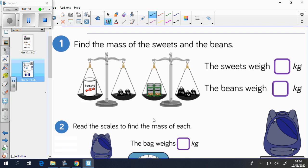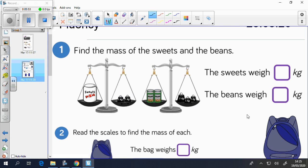Have a go at question 1. It says, find the mass of the sweets and the beans. The sweets weigh something kg, the beans weigh something kg. So again, you need to add up this side, add up this side to find the weight. Pause the video now to have a go.